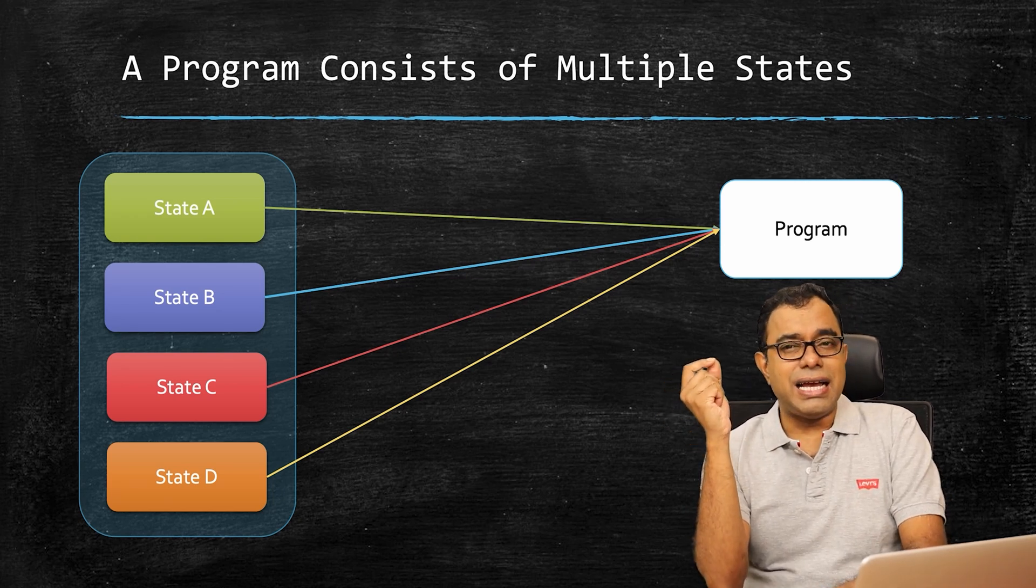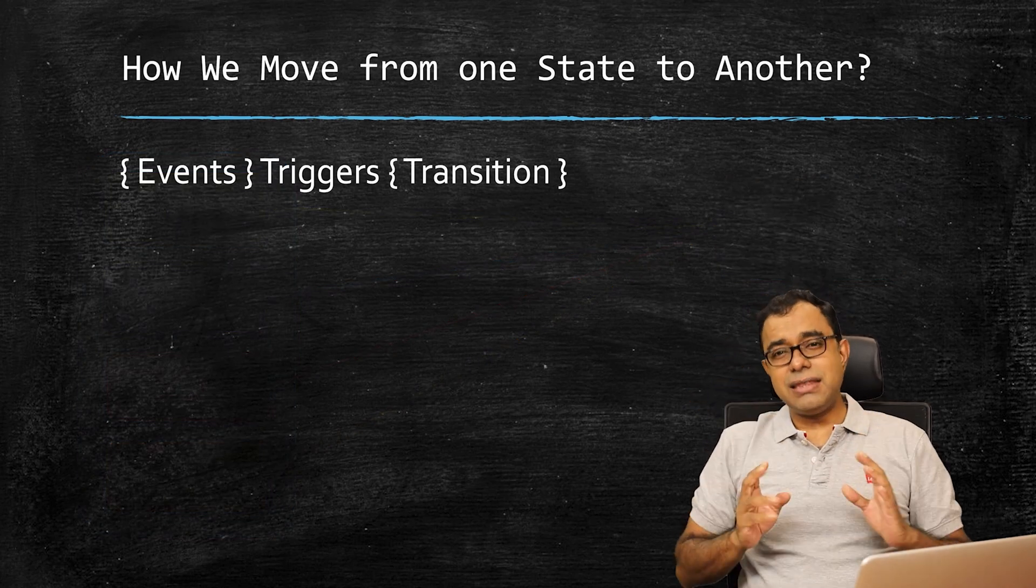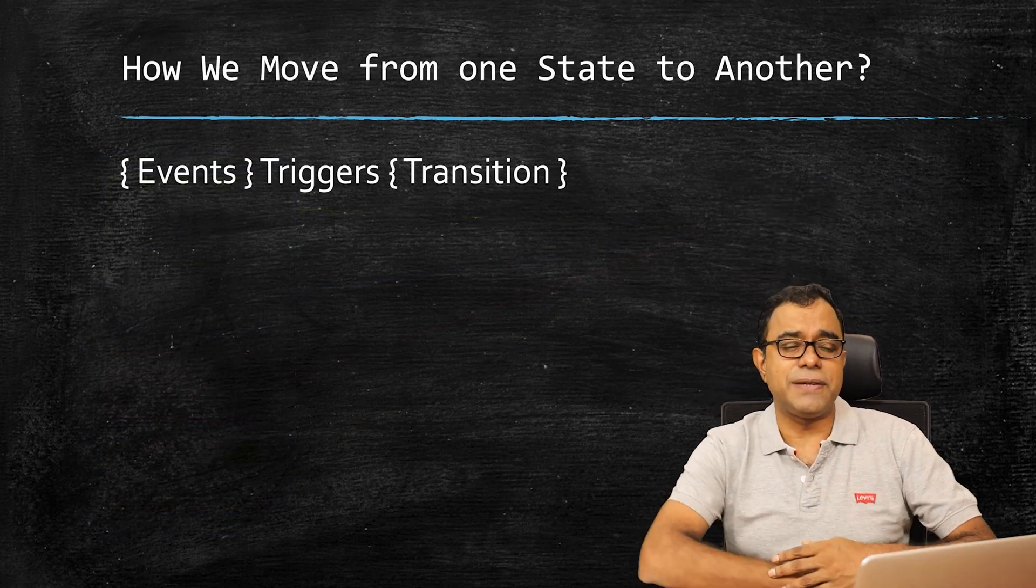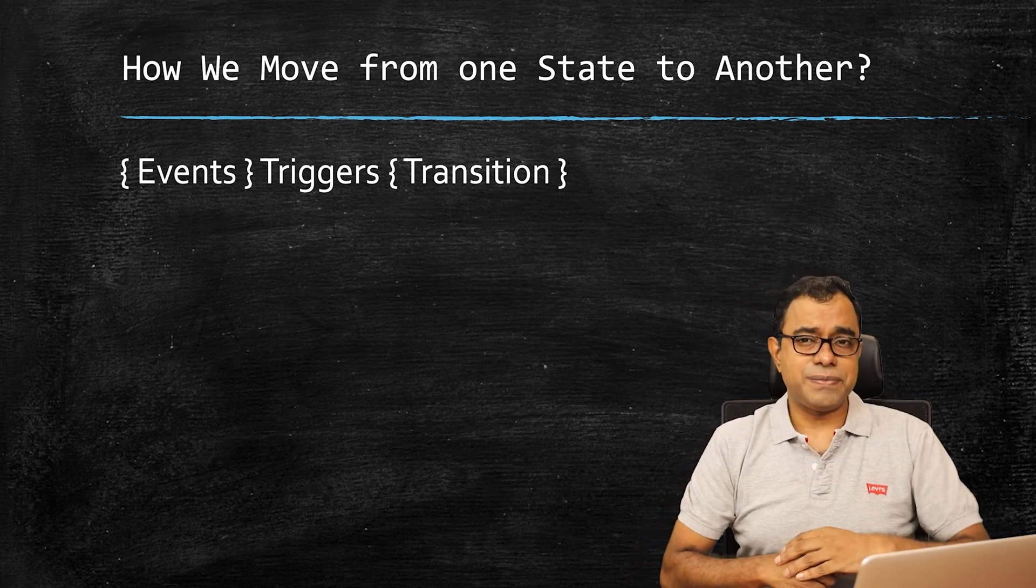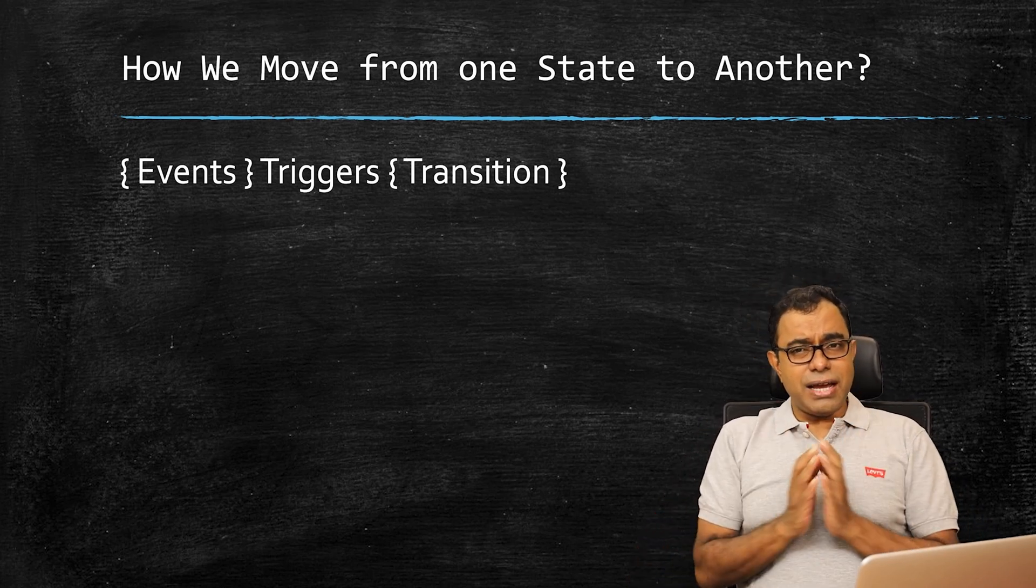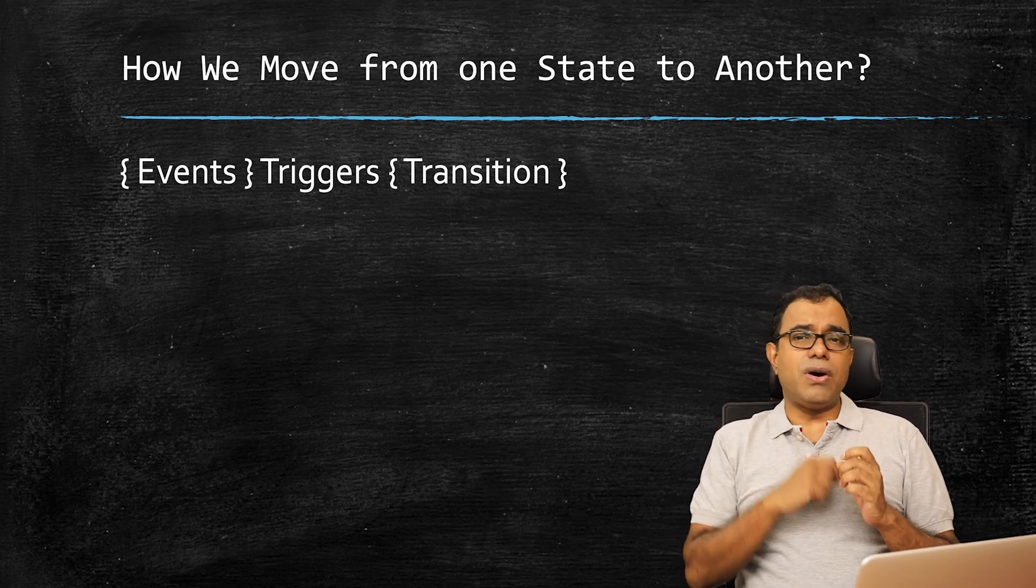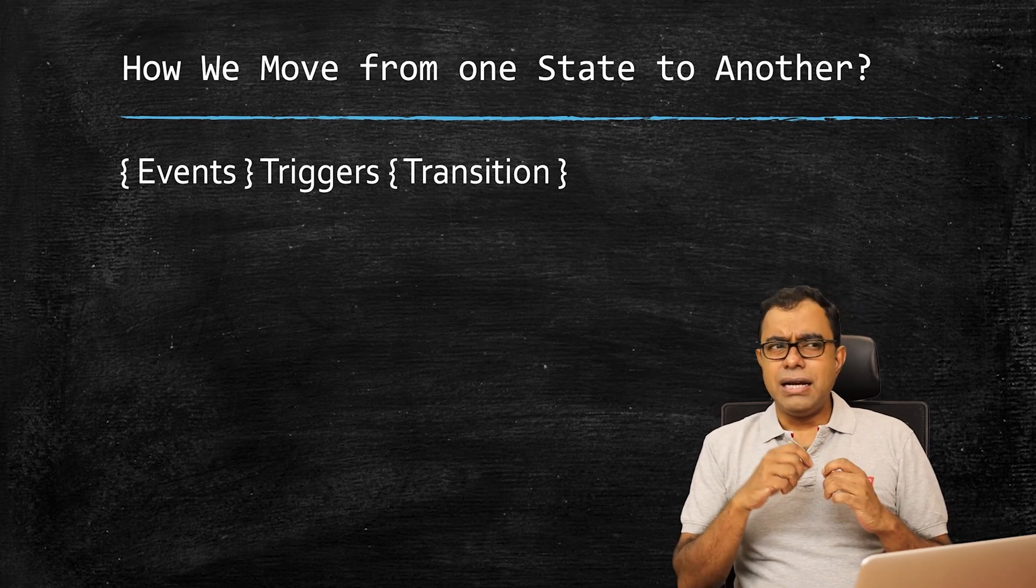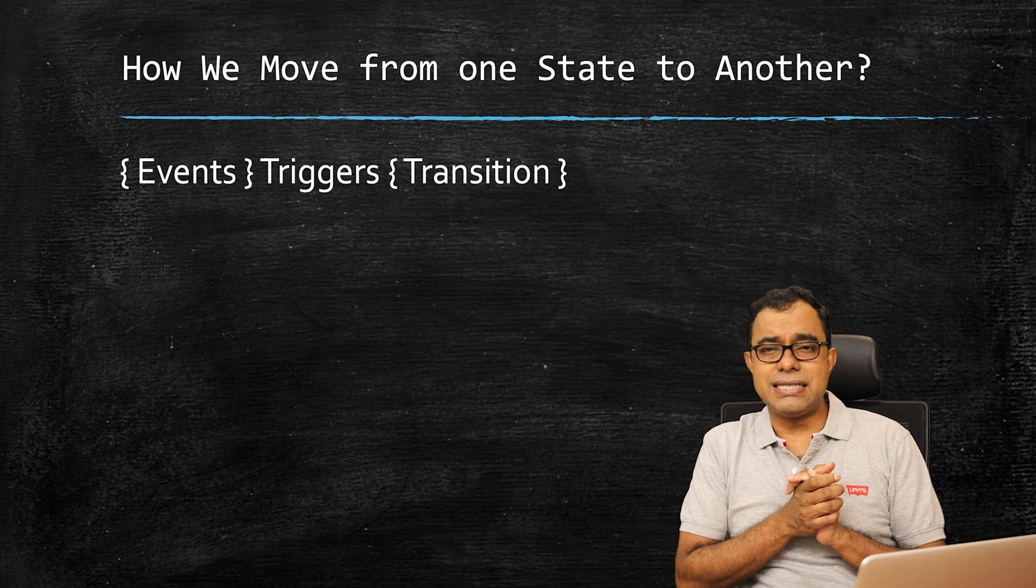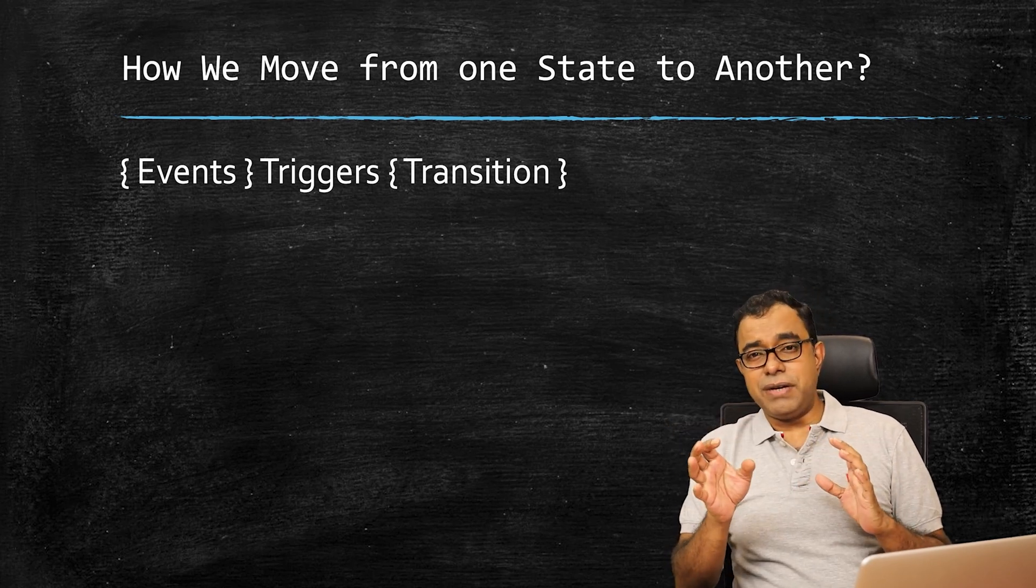But you will ask a question: I know in my program there are multiple states, but how do I go from one state to another state? That's a very good question, and that question brings us two more things which are in the ecosystem of state machines. They are events and transitions.